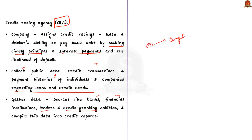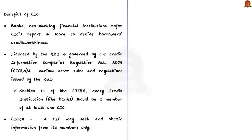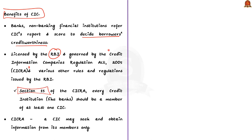Now let us see the benefits of CIC. Firstly, banks and NBFCs refer to the CIC reports and scores to decide the creditworthiness of borrowers before granting a loan or issuing a credit card. Secondly, an important point is that CICs in India are licensed by RBI and governed by the Credit Information Companies Regulation Act 2005 or CICRA, along with various rules and regulations issued by RBI. As per Section 15 of the CICRA Act, every credit institution like banks should be a member of at least one CIC. Moreover, the CICRA Act stipulates that a CIC may seek and obtain information from its members only.